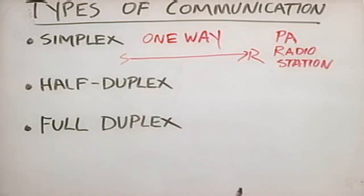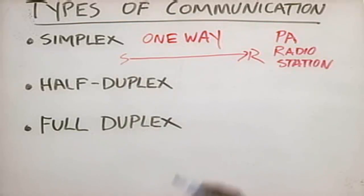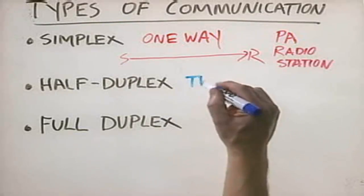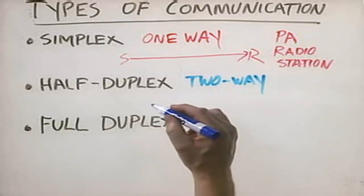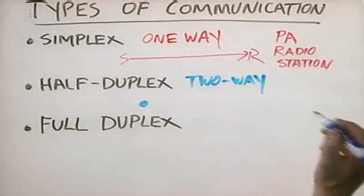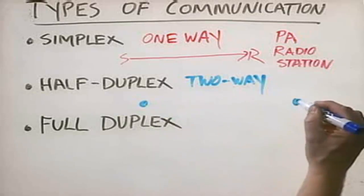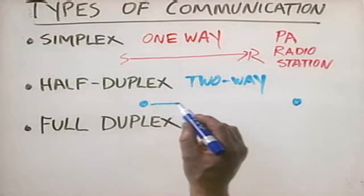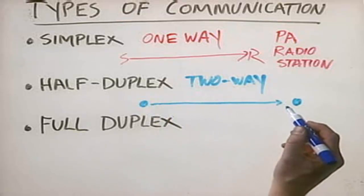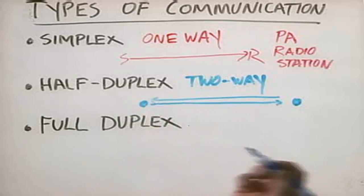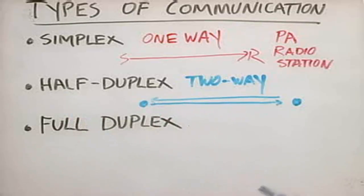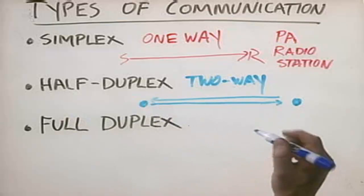Half duplex, on the other hand, involves two-way communication, in which case we have a host here and a host here. And information can go this direction, and information can go back this direction as well. Now, the key with half duplex is that you can only be communicating in one direction at a time.